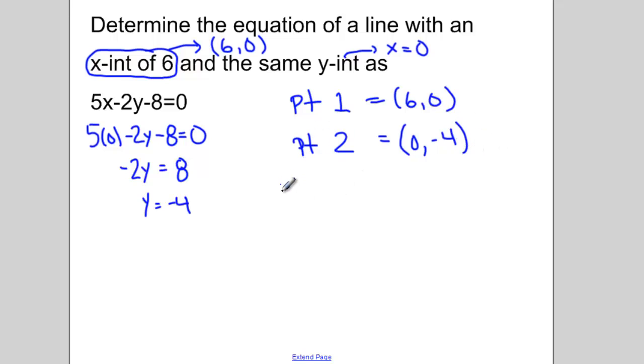I'm going to use these two points together to find my slope. So y2 minus y1 over x2 minus x1. Pick the largest x value to be my second point. So I would have 0 take away negative 4 over 6 take away 0, which gives me a slope of 4 sixths which reduces to a slope of 2 thirds.